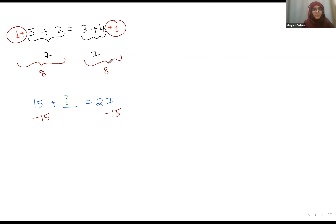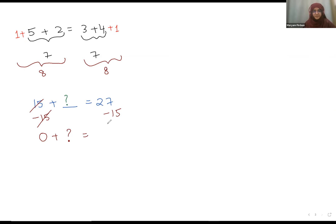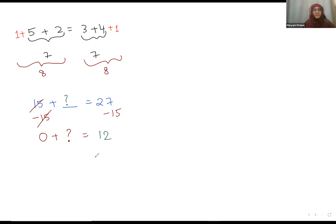You can't just subtract something from one part of the equation and not the other — you have to do it on both parts. So 15 minus 15 gives you 0. Then 0 plus question mark equals 27 minus 15. That is 12. So the value of the question mark equals 12, and you just fit 12 into the equation to satisfy it.